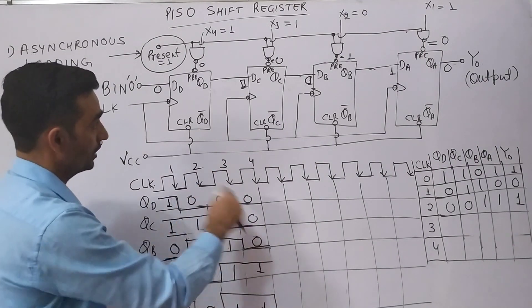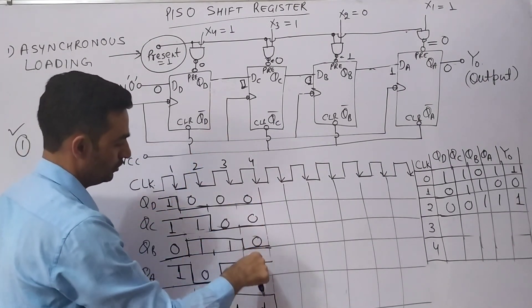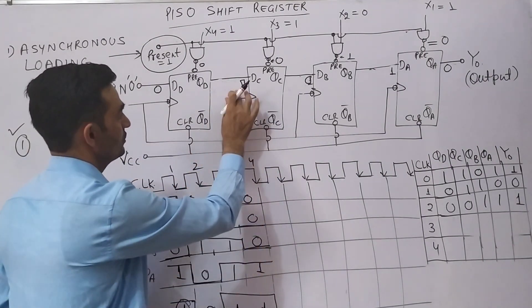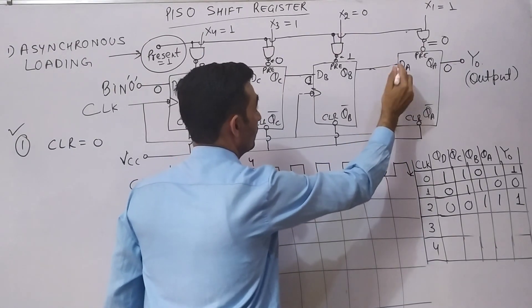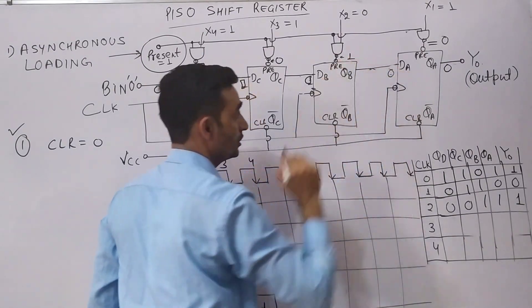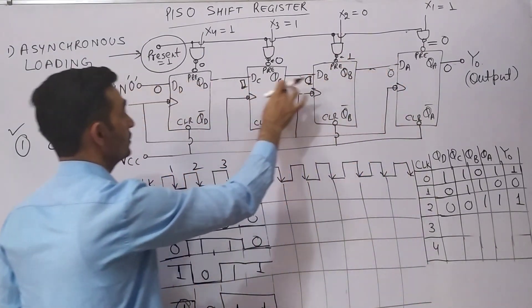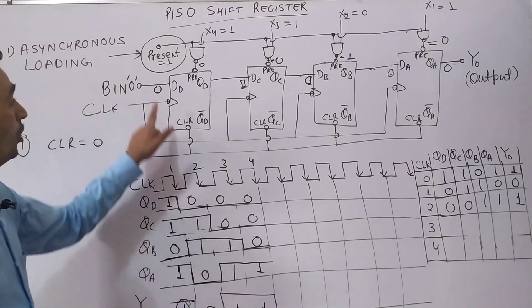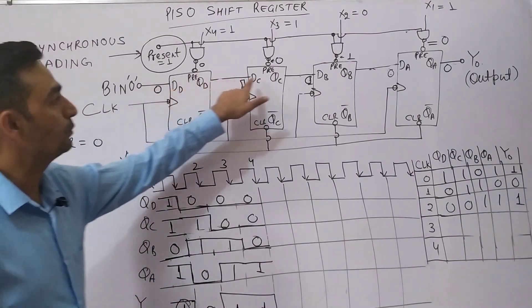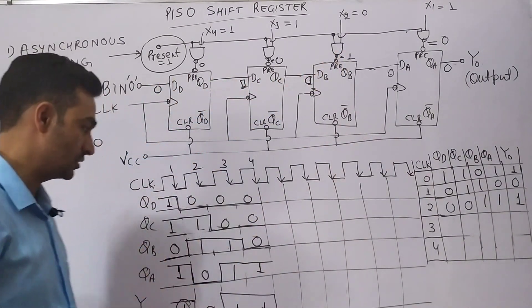After the fourth clock edge, the inputs fed are 0, 0, 0, 0, so all flip-flop input data is 0, 0, 0, 0. At the fourth clock edge, all flip-flop outputs will go to 0, and YO will be equal to 0.